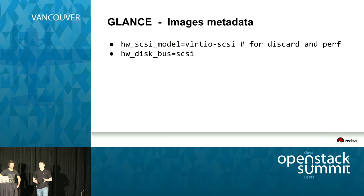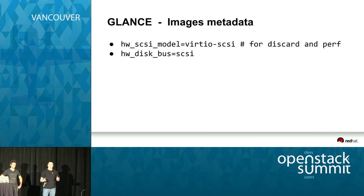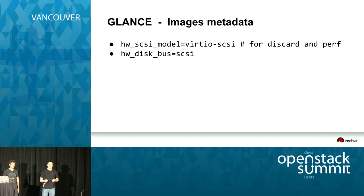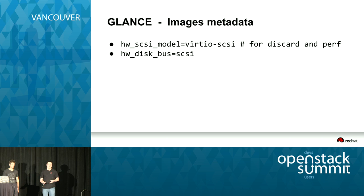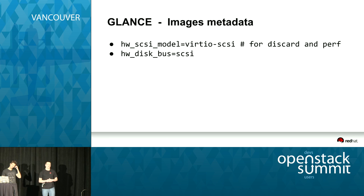One of the lesser-used features of Glance is metadata that you can associate with an image. With this metadata, you can tell Nova properties about how the image should be used. For example, you can specify the disk bus. If you're using modern Linux guests, you really want to be using the Virtio SCSI bus — generally higher performing than the existing Virtio block bus, and it also allows discard support if you want to enable that separately.